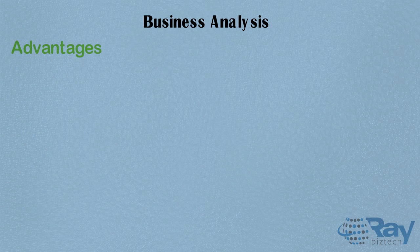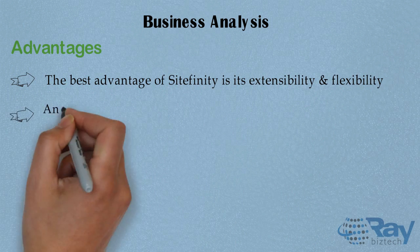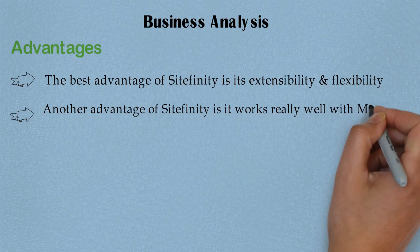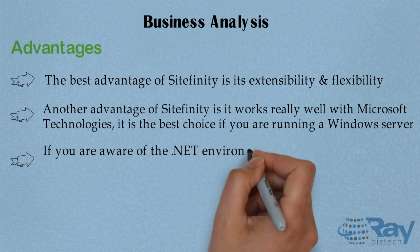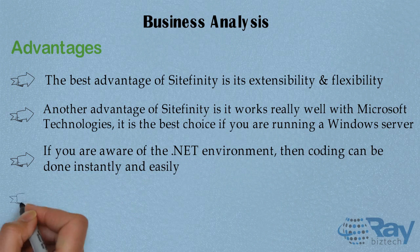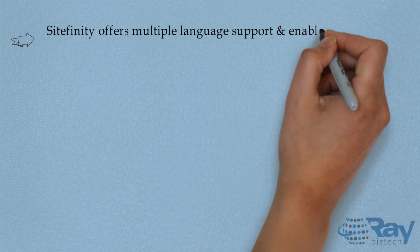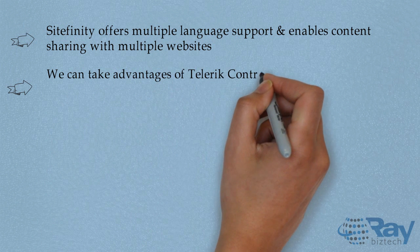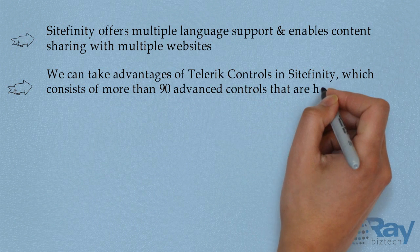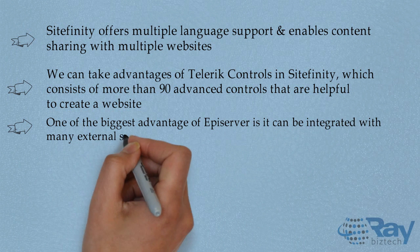Business Analysis — Advantages: The best advantage of Site Affinity is its extensibility and flexibility. It works well with Microsoft technologies and is the best choice for running a Windows Server. In a .NET environment, coding can be done instantly and easily. Rendering is fast compared to other CMS as it leverages caching concepts. Site Affinity offers multiple language support and enables content sharing across multiple websites. It also leverages Telerik controls, which include more than 90 advanced controls helpful for creating websites.